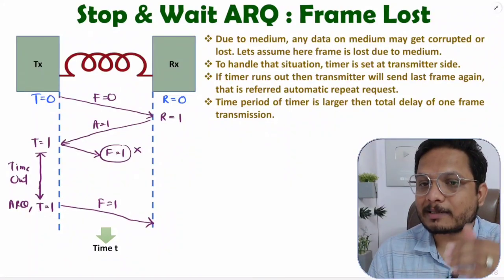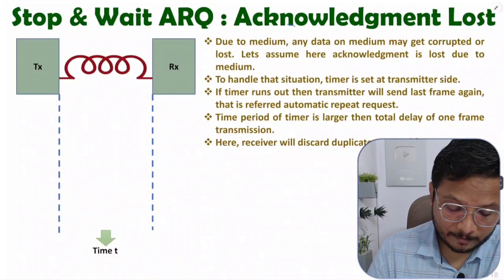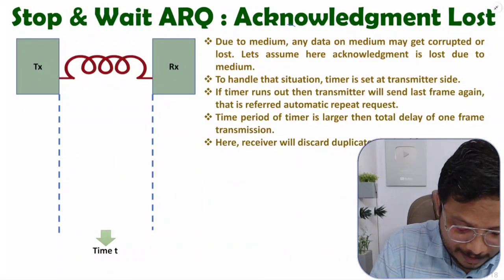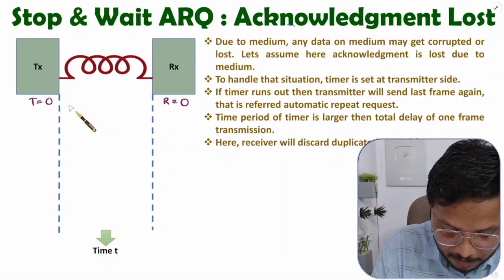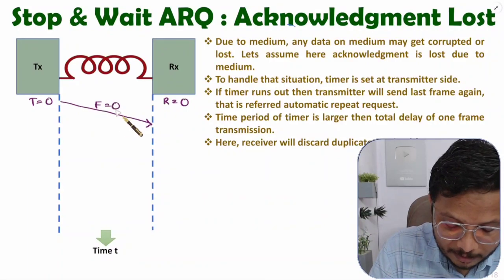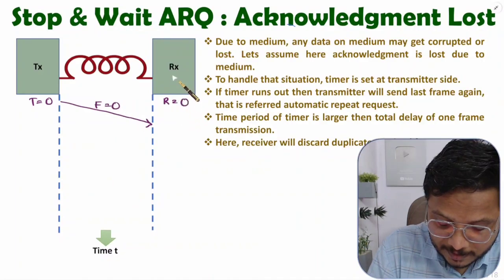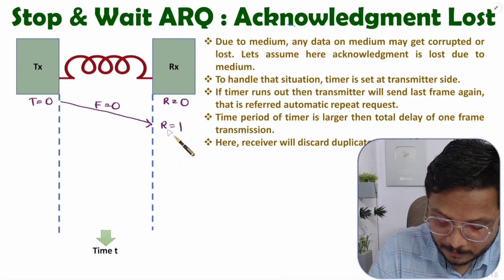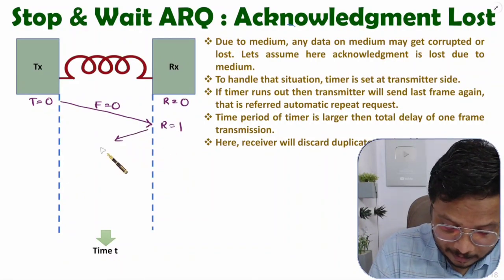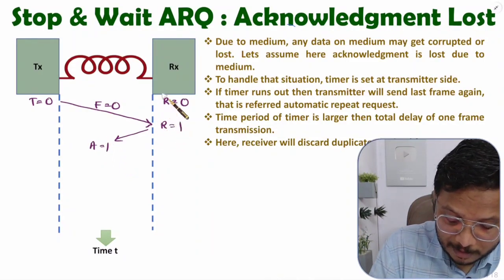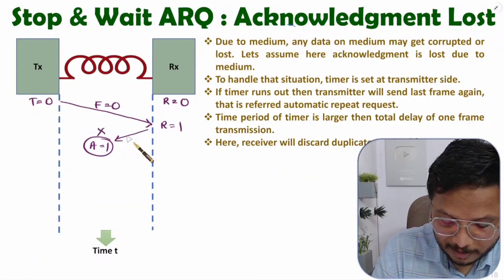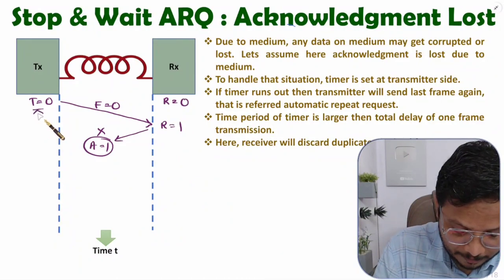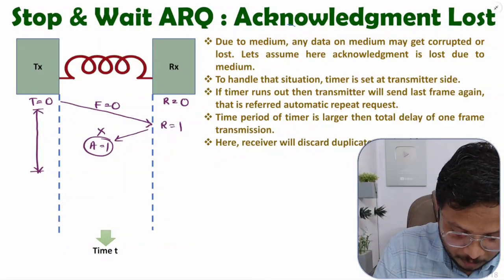Now let us consider the second case: acknowledgement lost. Again, both transmitter and receiver start with variable zero. The transmitter sends frame zero to the receiver. The receiver receives it successfully, changes its variable to r=1, and sends acknowledgement a=1 — meaning it is asking for frame number one. However, this acknowledgement gets lost in the medium. The transmitter has a timer running, and as time progresses the timer counts up.